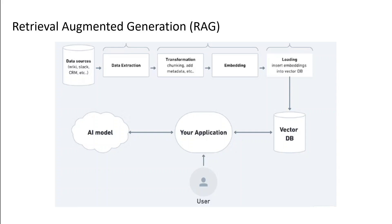Foundation models are trained on very general domain datasets like Wikipedia, Slack, CRM, Reddit, or such data sources, so they are not very effective for domain-specific tasks or your own company's specific tasks. That is where you can use Retrieval Augmented Generation, or RAG, to retrieve data from outside a foundation model and augment or support your prompts by adding the relevant retrieved data in the context.